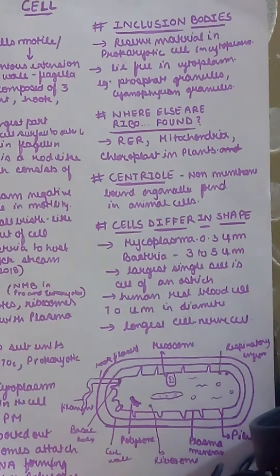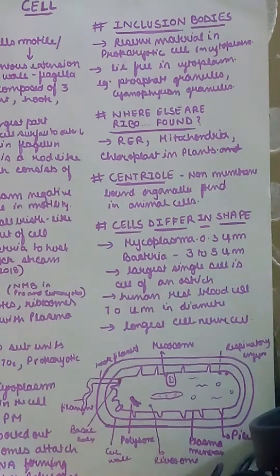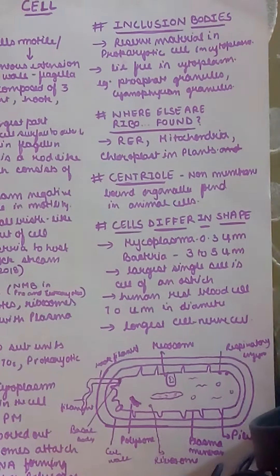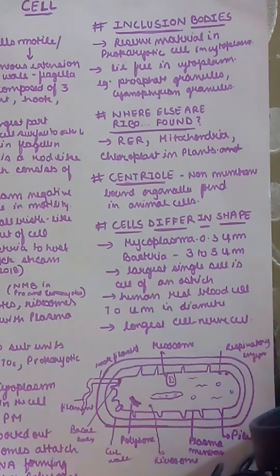The largest single cell is the egg cell of an ostrich. Human red blood cells are 7.0 micrometers in diameter. The longest cell is the nerve cell. So we are done with this much — now let's focus on the diagram.